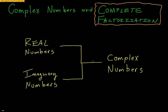Complex numbers are a combination of real numbers and imaginary numbers. So when we take real numbers and combine them with imaginary numbers, we get complex numbers. Everybody knows real numbers like 6, 7, negative 3, and even radical 5. Imaginary numbers involve i, the imaginary unit.